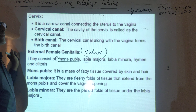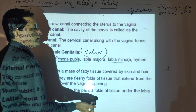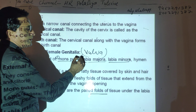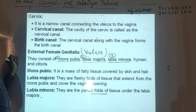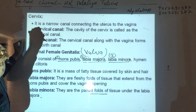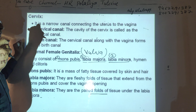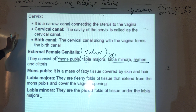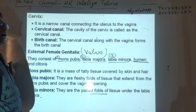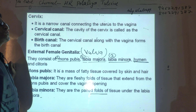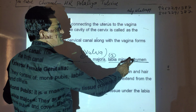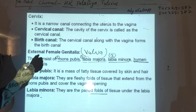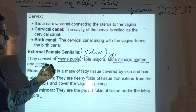Inside the labia majora is another layer — the labia minora. The labia majora is the larger, darker, outer layer. The labia minora is the fold of tissue underneath the labia majora. Where the vaginal region opens into the external genitalia, there is a membrane called the hymen. The hymen membrane may break due to physical exercise, cycling, riding, heavy weight lifting, or other physical activities.